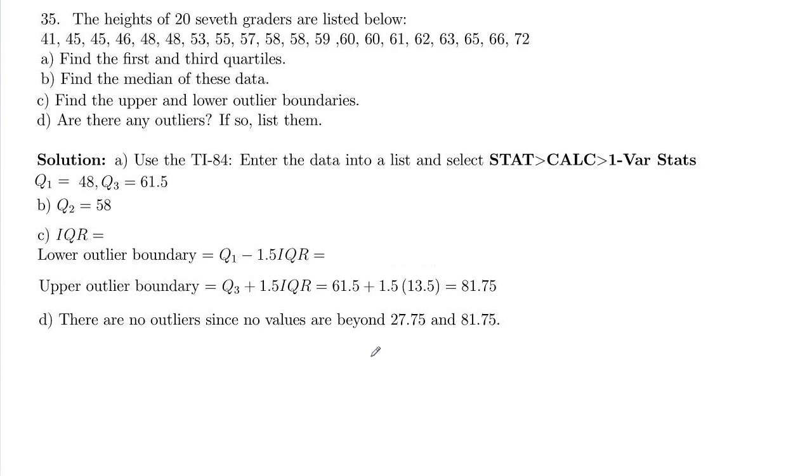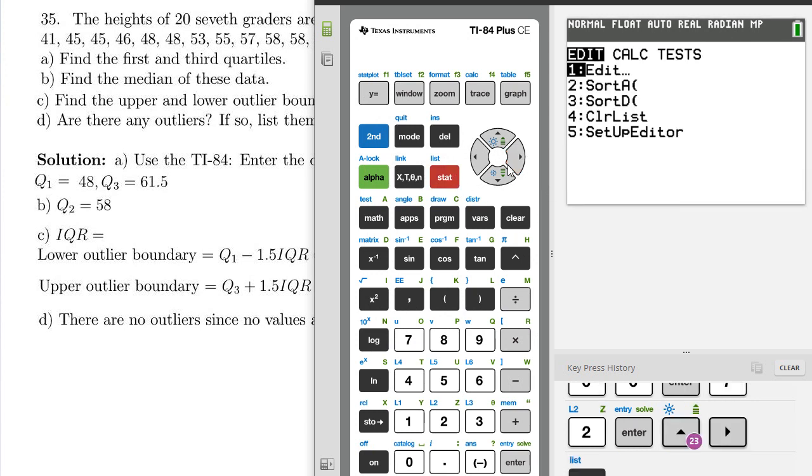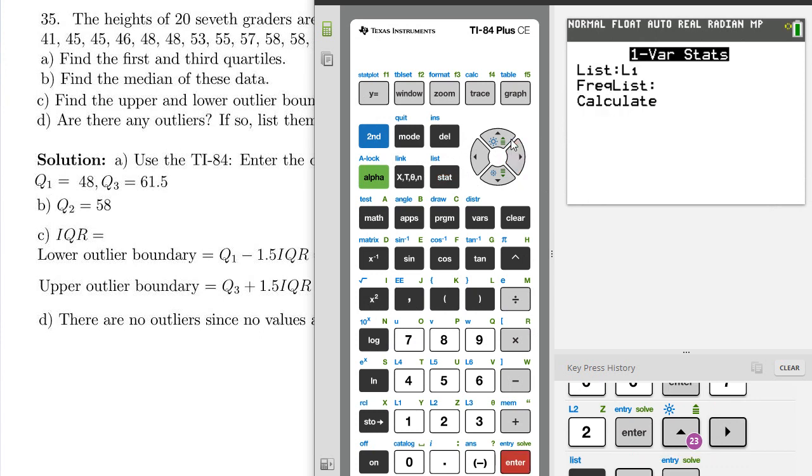We can do this using stat, calc, and one variable stats with the TI-84. I have already entered these into a list in the calculator, so we want to go to stat and calc and one variable stats.